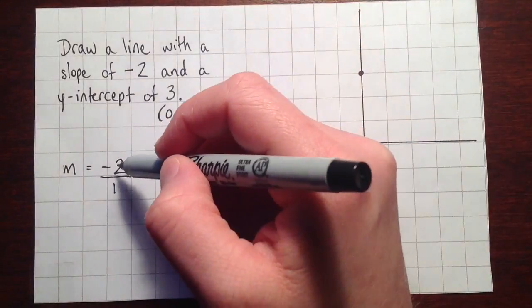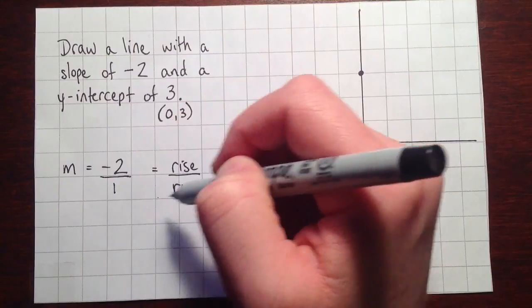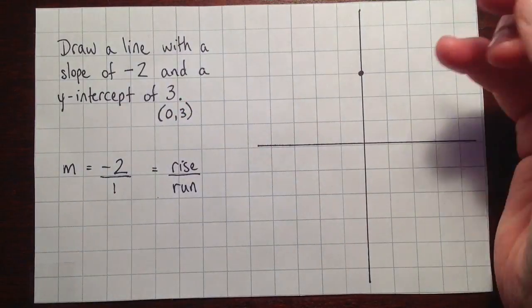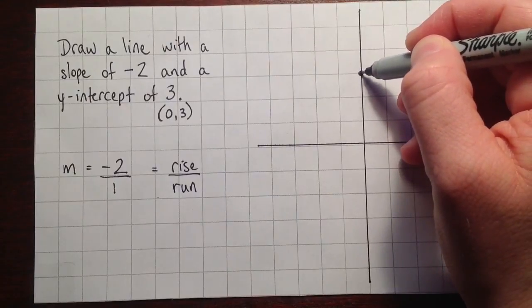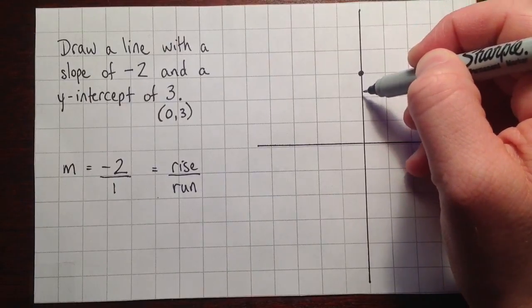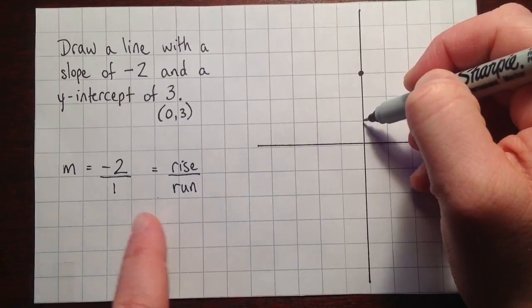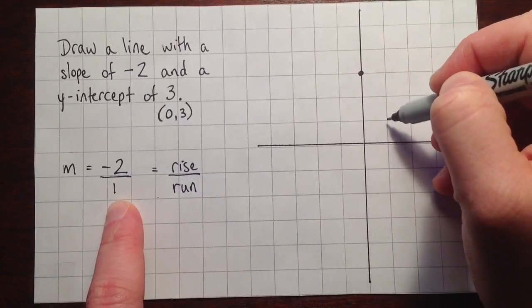So that means we want to rise negative 2 and then do a run of 1 every time. So we'll start at the point that we know. And we'll rise negative 2, so that means we'll go down 2. And then we'll do a run of 1, so that means we'll go to the right one.